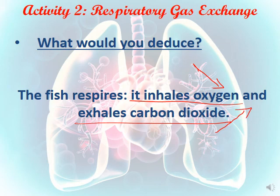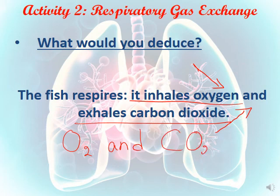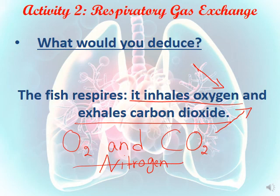From this experiment we can conclude that the respiratory gases are oxygen (O₂) and carbon dioxide (CO₂), while nitrogen gas is not a respiratory gas since it is neither absorbed nor released. Oxygen is inhaled by the fish since its amount is decreasing, while carbon dioxide is released by the fish since the amount of carbon dioxide is increasing. Thank you, goodbye!